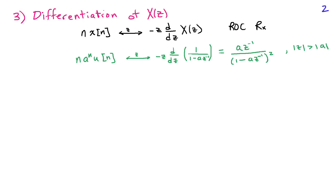The third property is differentiation of X of Z. If we multiply X of n by n, what happens in the Z-domain is we have negative Z times the derivative of X of Z with respect to Z. For example, if we have n times a to the n u of n, the Z-transform is obtained by first differentiating the Z-transform of a to the n u of n and then multiplying by negative Z. The result is aZ^(-1) over (1 - aZ^(-1))^2, with region of convergence magnitude of Z greater than magnitude of a.